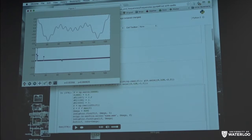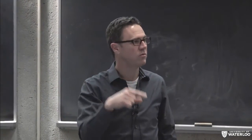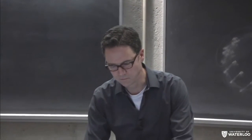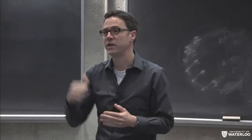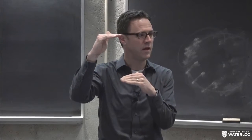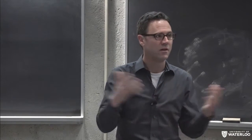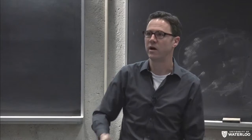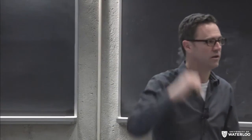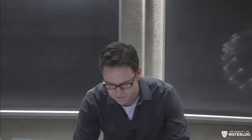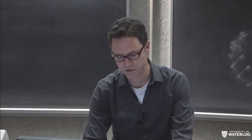Your brain's auditory system is actually undoing that process. It takes the time-series signal of my voice and converts it to frequencies in your ear. Your auditory system does a frequency decomposition, which is why it's easy for us to detect a musical octave. When you multiply the frequency by two, you immediately recognize that as an octave change. Your auditory system is doing multiplication because you're doing a frequency decomposition.